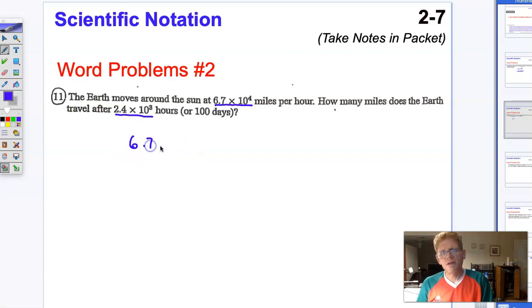6.7 × 10⁴ times 2.4 × 10³. And once again, this is just multiplication with scientific notation. We'll multiply our two constants here: 6.7 and 2.4.